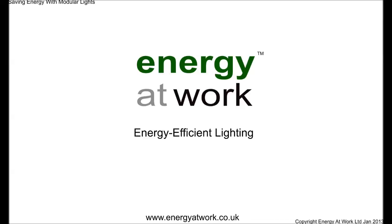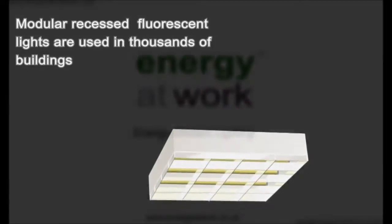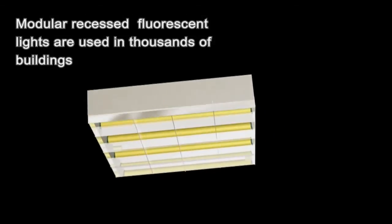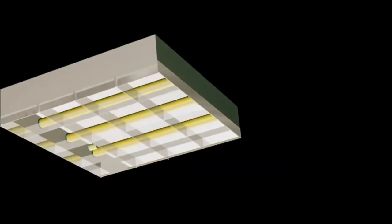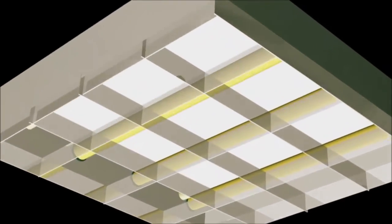Thousands of buildings are wasting energy by using old-style fluorescent lighting. One of the worst offenders is recessed modular four-tube lights. The four tubes and two wire-wound ballasts can use up to 90 watts of energy.